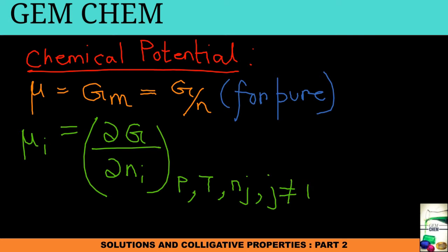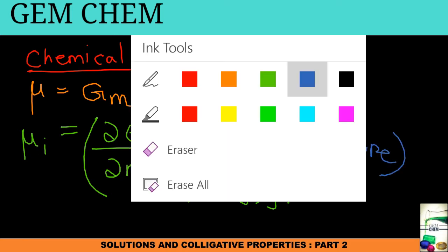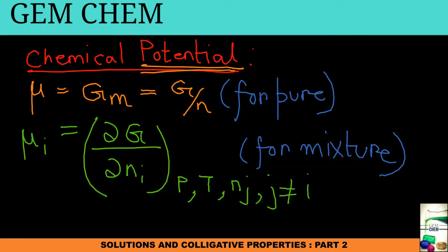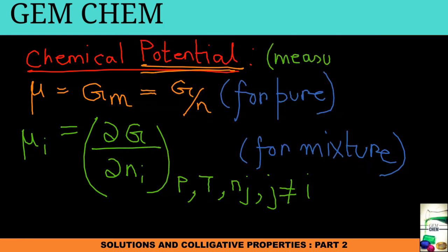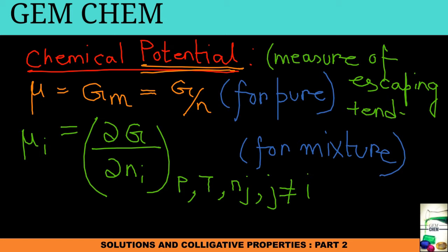When a mixture is being considered, the formula becomes mu_i equals delta G by delta n_i at constant pressure, constant temperature, and constant n_j where j is not equal to i. Now, why is it referred to as a 'potential'? It is actually a measure of escaping tendency. Mass transfers from high chemical potential to low, directing the direction of physical and chemical processes — thus it is called a potential.